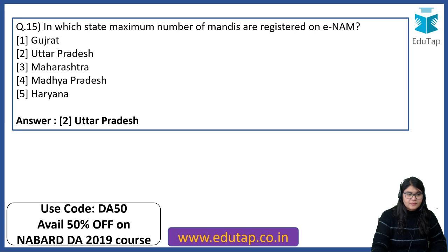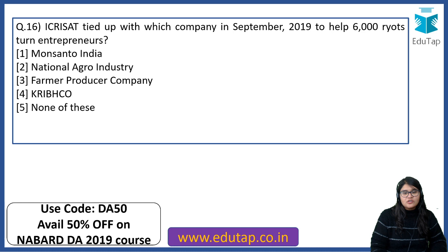IKRI tied up with which company in September 2019 to help 6000 riyaths — that is farmers — turn entrepreneurs? The right answer is Farmer Producer Company.